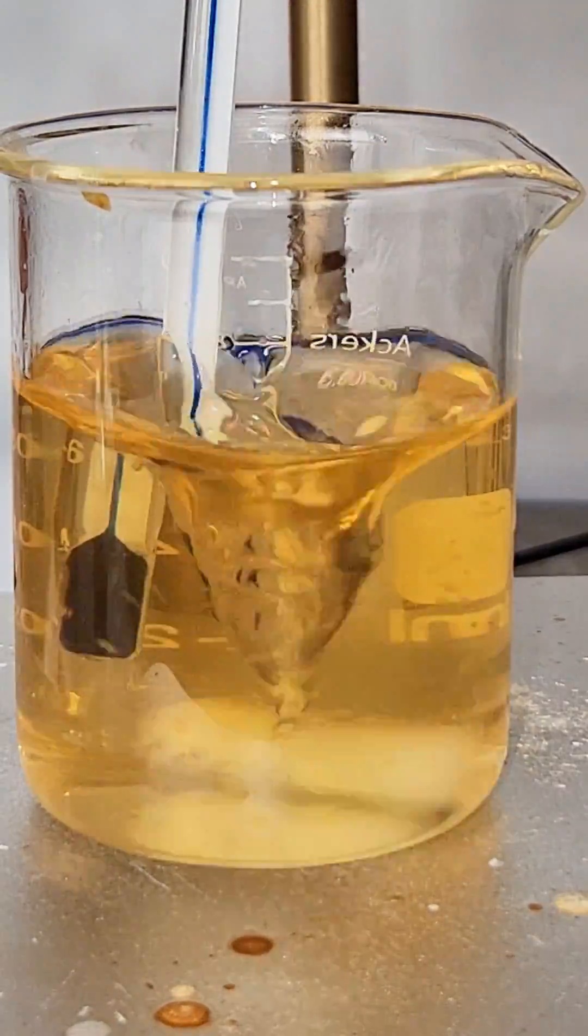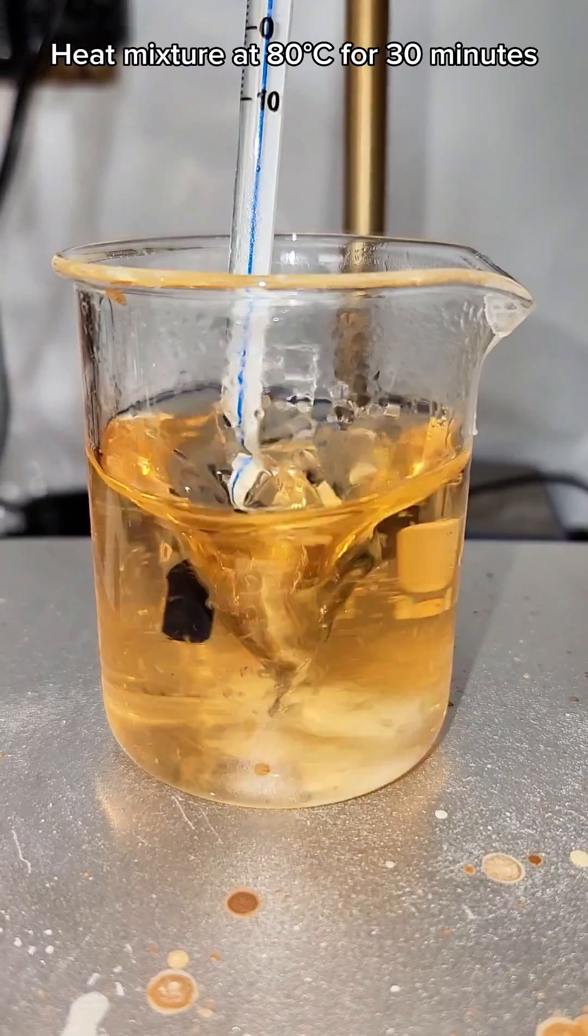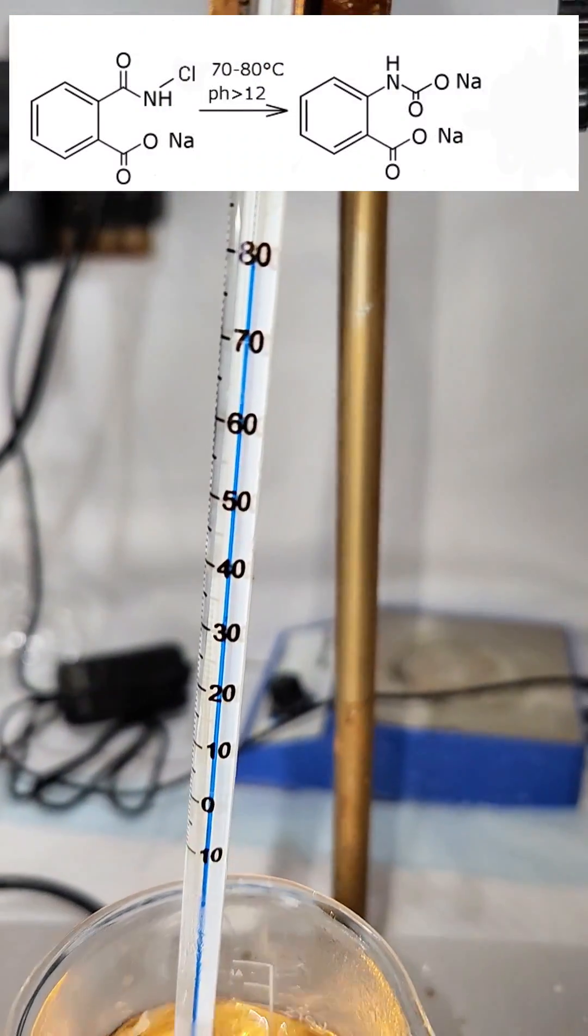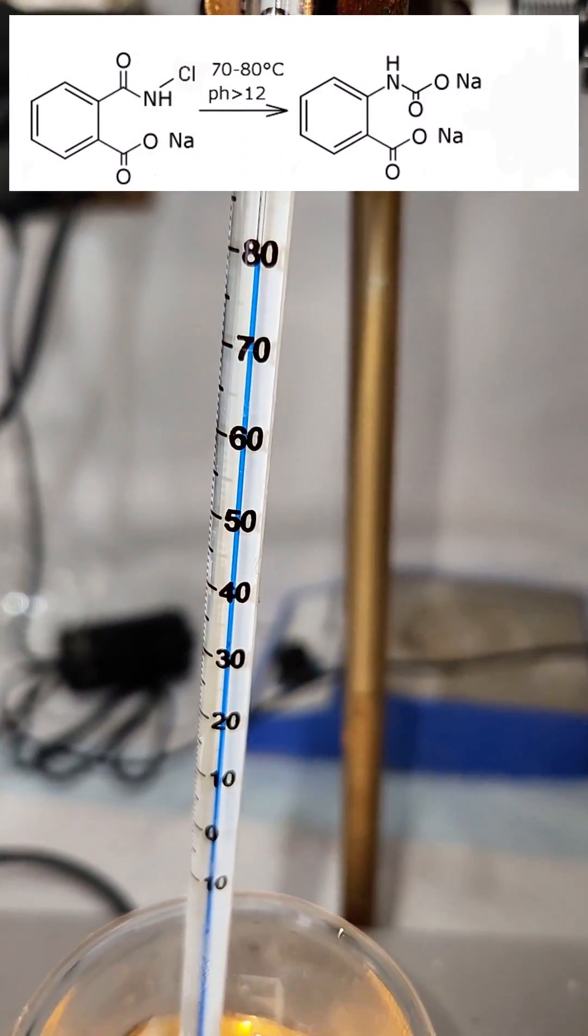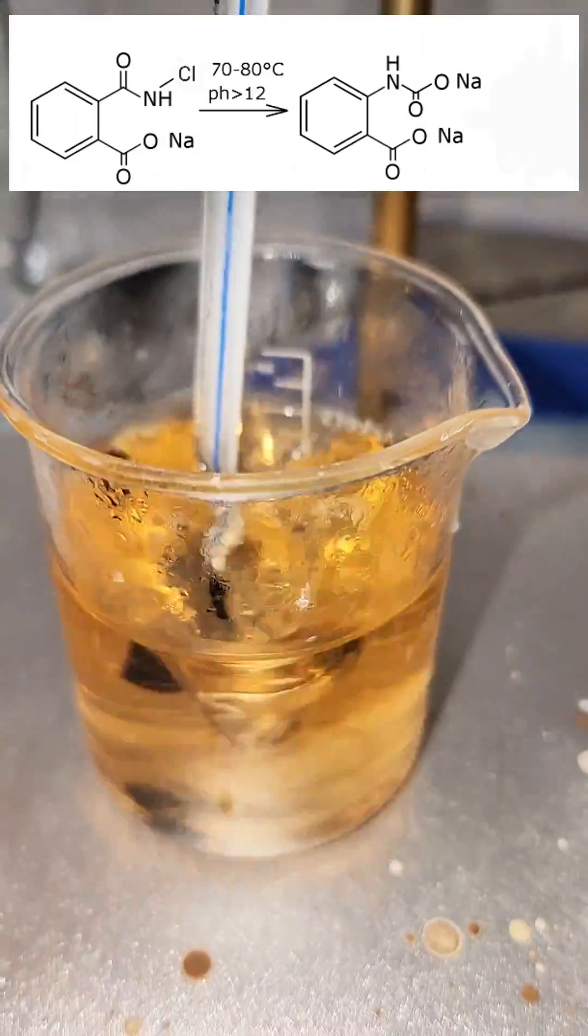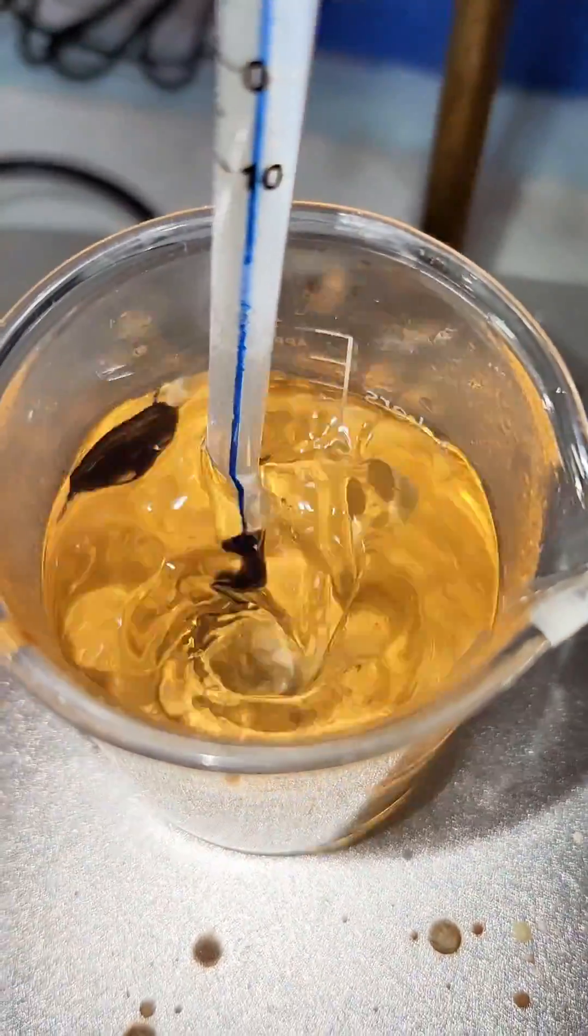This temperature is held for 30 minutes and during that time the chlorine is replaced with a carboxylate group. This sodium carboxylate salt is fairly insoluble and might precipitate out if you lost too much water during this step but it's not a big deal.